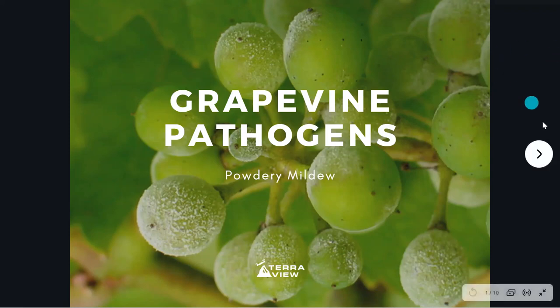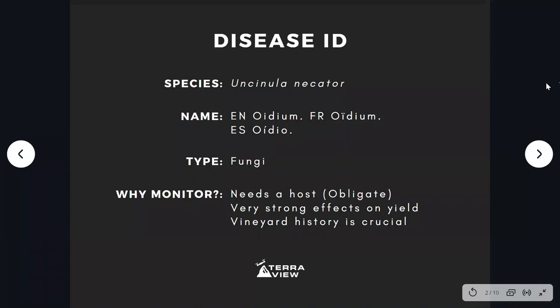This disease is known as the oidium of the grapevine, caused by Uncinula necator. It is also a fungus, and despite being a fungus it's very different from other fungi like downy mildew, black rot, and Botrytis. It is also an obligate parasite like downy mildew, because it needs a host to survive and to feed on.